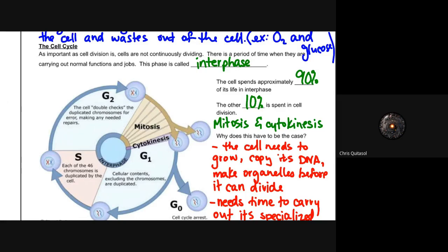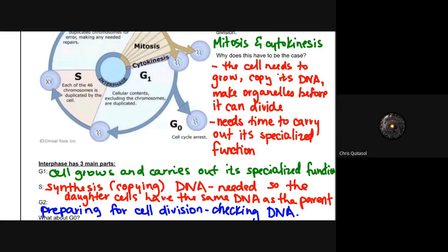The cell needs to grow in order to copy its DNA, and it needs to take in nutrients and utilize those nutrients. Once it does all of that for that 90% of its cell cycle in interphase, then it can go through mitosis and carry out the reproduction of that cell.